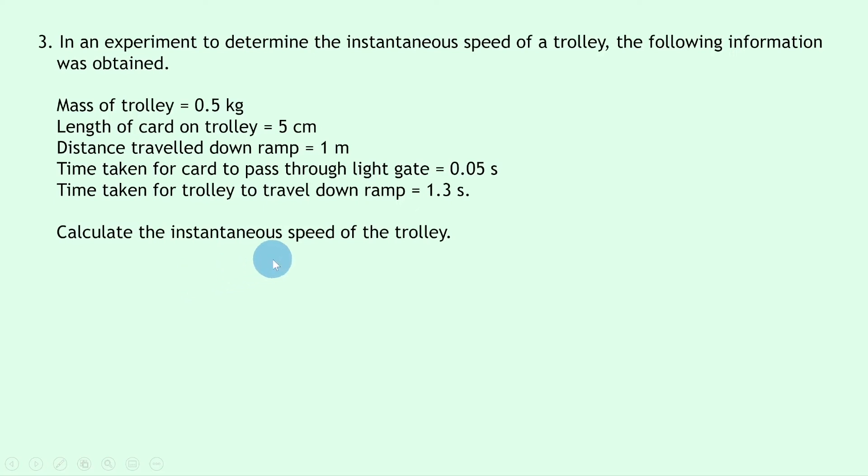It then says calculate the instantaneous speed of the trolley. Well again, just like in question 2, whenever we're dealing with instantaneous speed, we need to take the distance to be the length or width of the card or mask. So writing down what we know, we're trying to find the instantaneous speed v. The distance d is equal to 5cm because that's the length of the card on the trolley, and we need to convert that into metres to give us 0.05 metres. And then the time is going to be the time taken for the card to pass through the light gate, which is 0.05 seconds, not the time taken for the trolley to travel down the ramp.